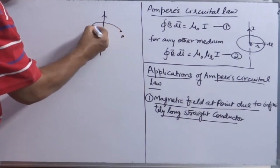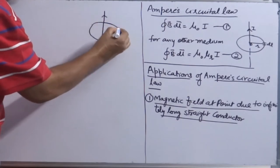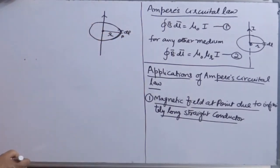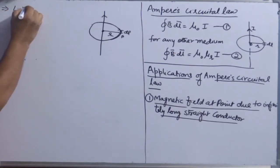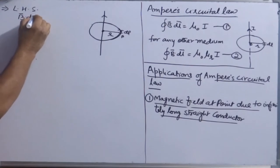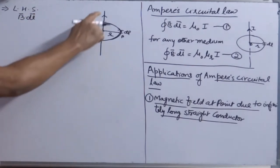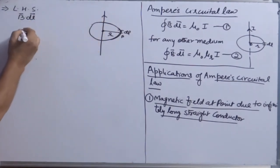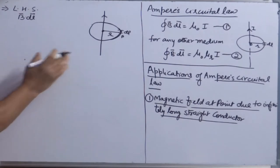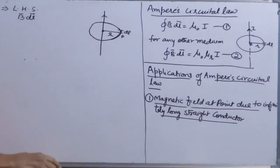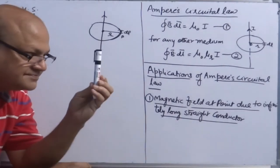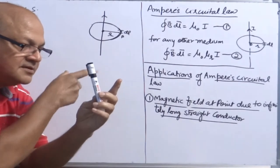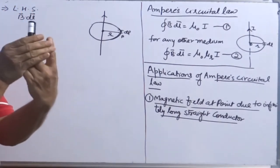First, you enclose this point in a closed loop. Choose an element of length DL with radius R. Going to the LHS of the equation — B dot DL — first solve this scalar product. Due to the straight conductor, the direction of magnetic field at point P will be inside. The element and the magnetic field are in the same direction because the conductor is this way, point P is here, and the element direction is given by the tangent drawn. So at this point, the direction of magnetic field is the same.